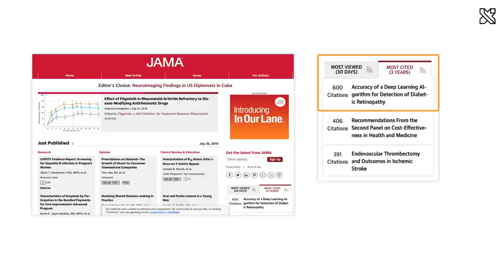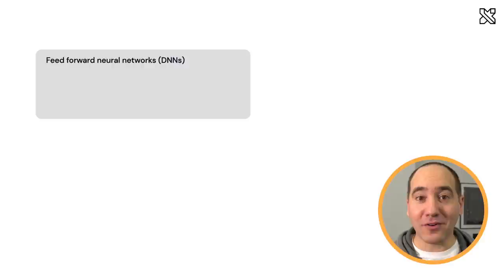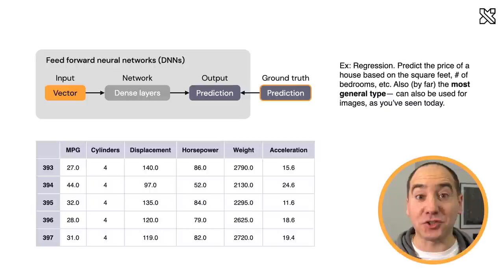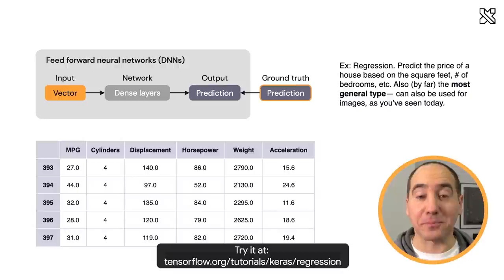Let's look at a few different families of neural networks. Dense neural networks, or DNNs, are the most general type because they take vectors as input. You can absolutely work with structured data in deep learning — for example, doing regression with a DNN where you start with a dataset of car features like horsepower, weight, and year, and try to predict miles per gallon.